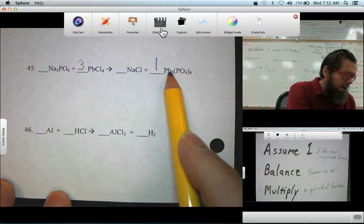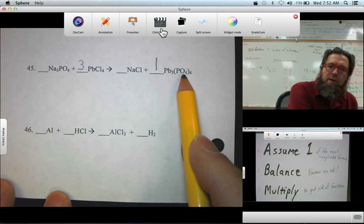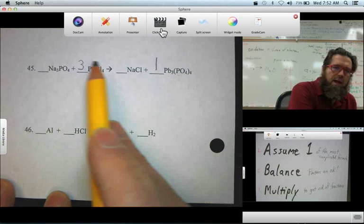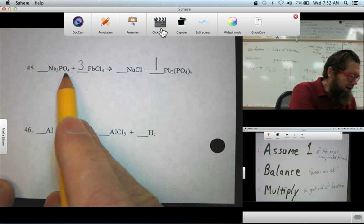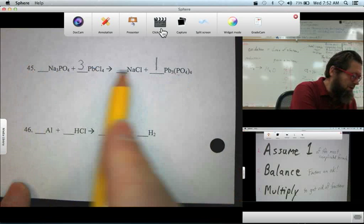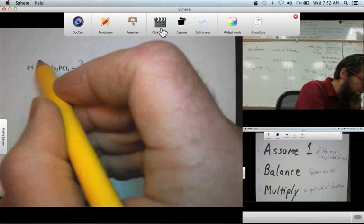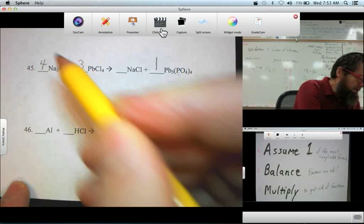And our assumption also means we have four phosphates, four PO4s. And we find phosphates on the other side. If we have four PO4s on the left, we must have four on the right. We must have four on the left.